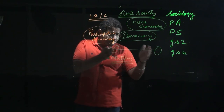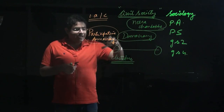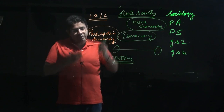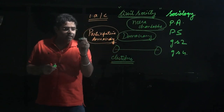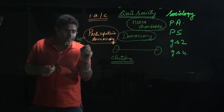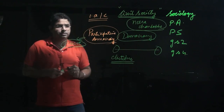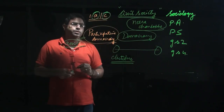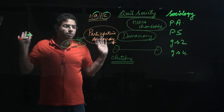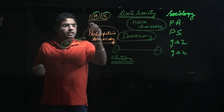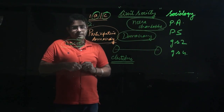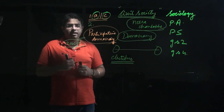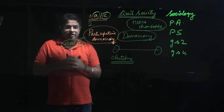On one end of the spectrum we have participative democracy. In this kind of democracy, the people really assert themselves. There is a high element of accountability and control. Importantly, politicians are not able to assert themselves unilaterally when it comes to policies and programs.